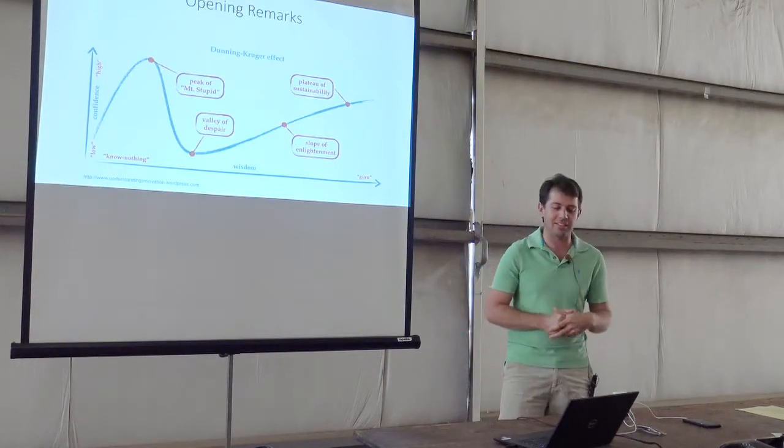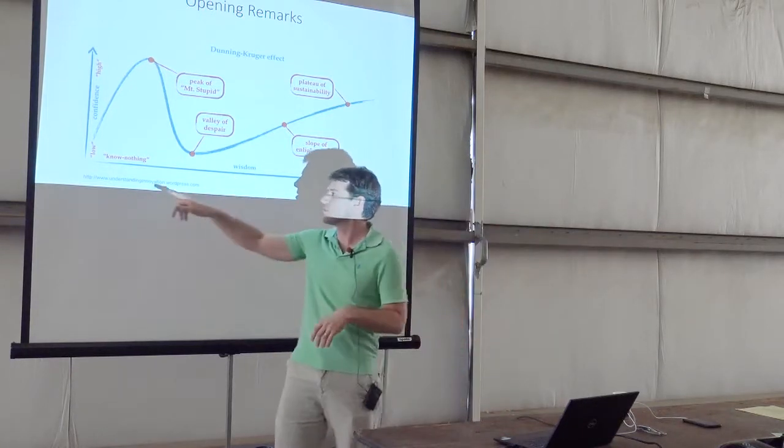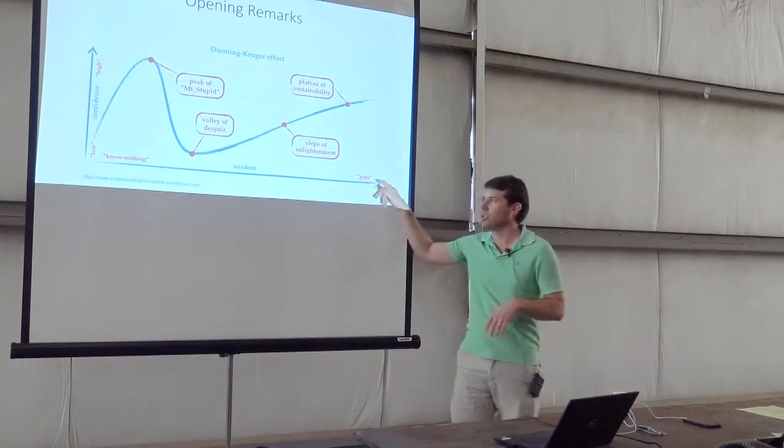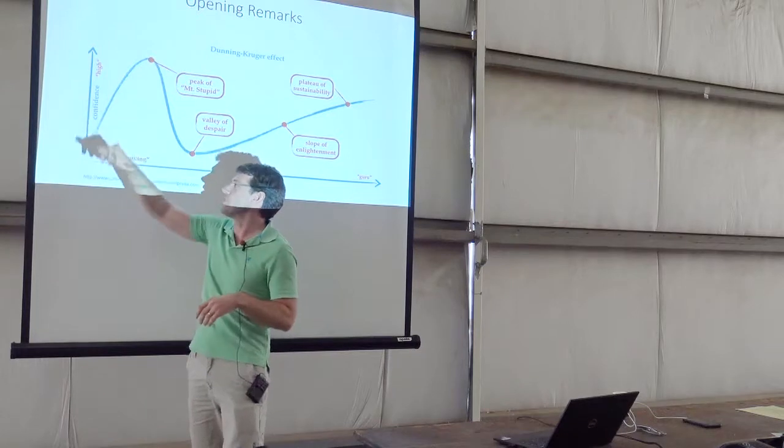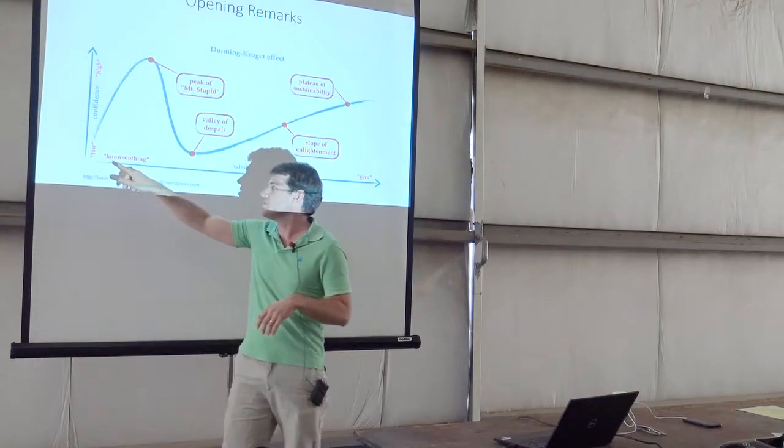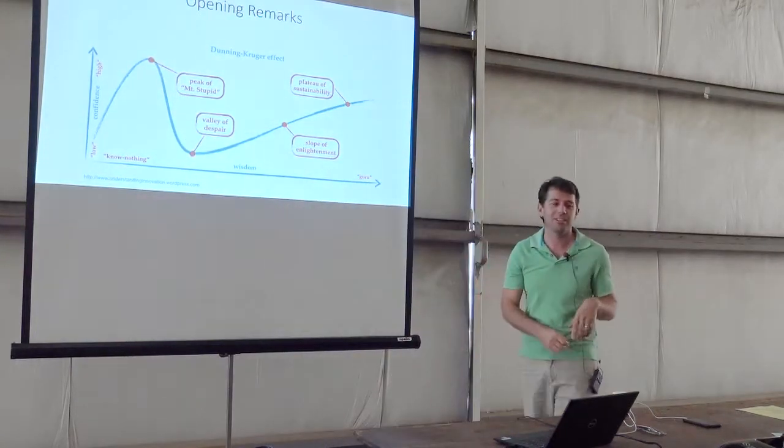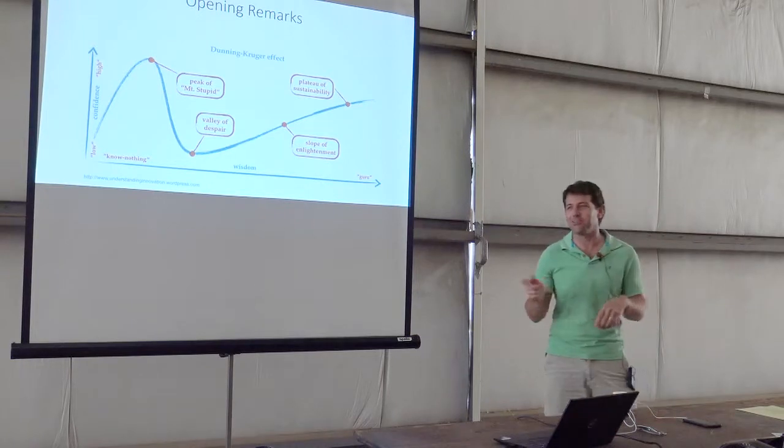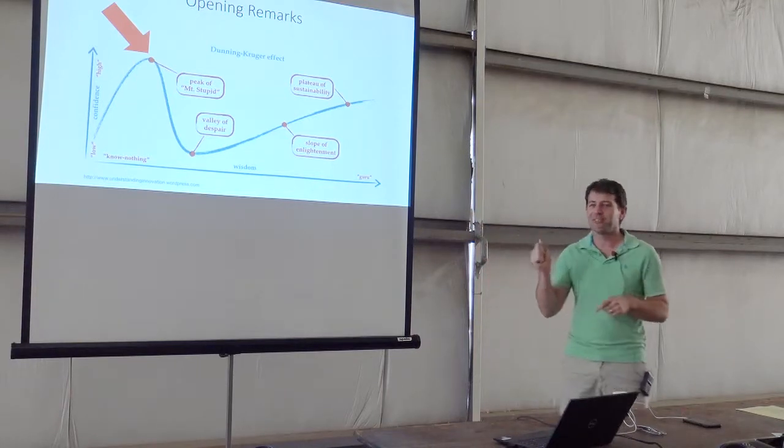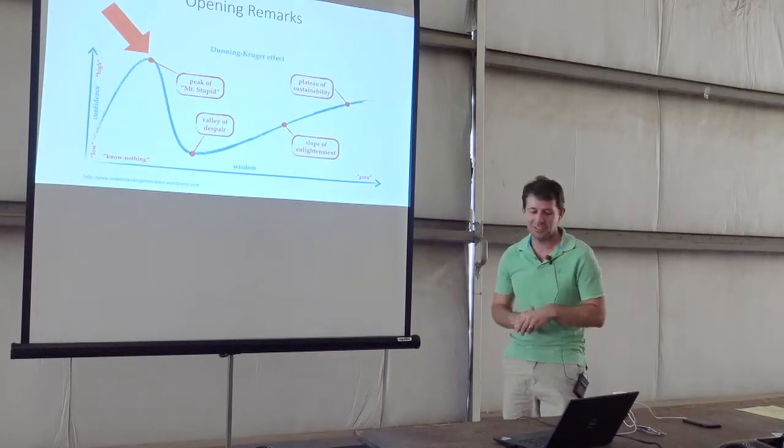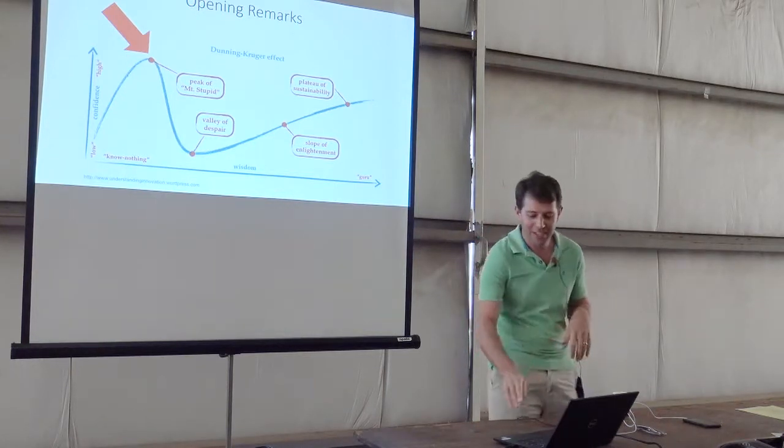Bob kind of referenced this yesterday - this is the Dunning-Kruger effect. Along the bottom here is wisdom, from knowing nothing to being the guru. You find that people's confidence levels are really low in the beginning, but as you know even less, you get to this point called the peak of Mount Stupid. That's when you know very little but you're very confident about the little that you know. Right now, that's kind of where this presentation is. I'm very confident of this, and I'm also cognizant that I'm sitting at the peak of Mount Stupid.